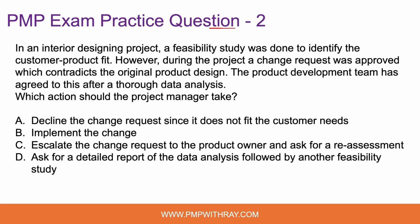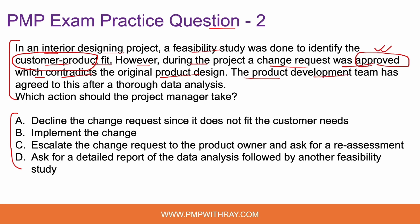Question number two — the drill remains the same. Please read the question and select an answer before we solve this together. You can pause the video here if you wish. In an interior designing project, a feasibility study was done to identify the customer-product fit. However, during the project, a change request was approved — and note that this was approved — which contradicts the original product design. The product development team agreed to this after a thorough data analysis. Which action should the project manager take?